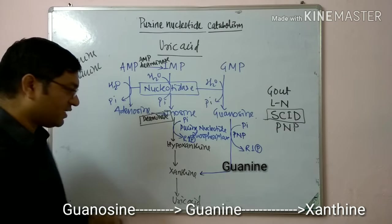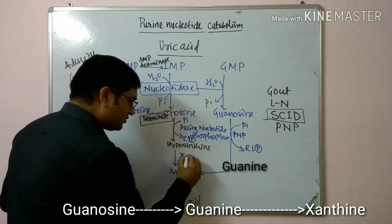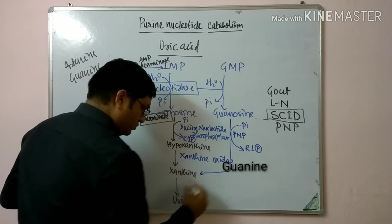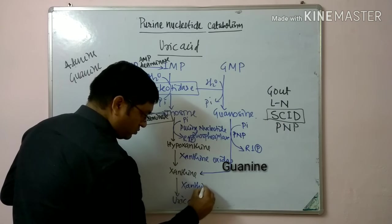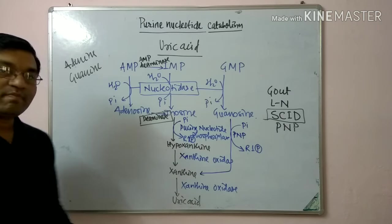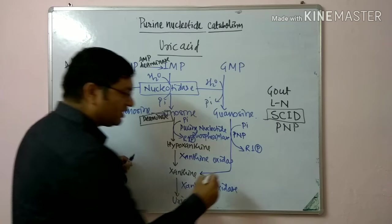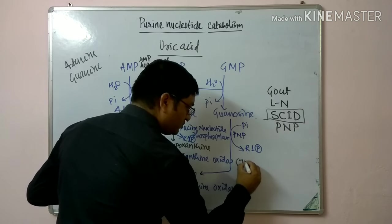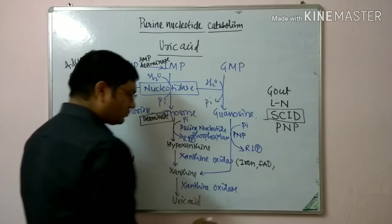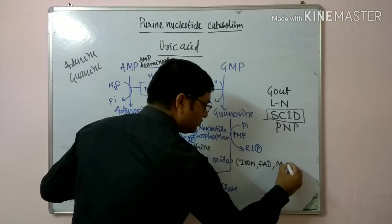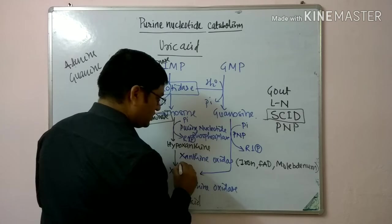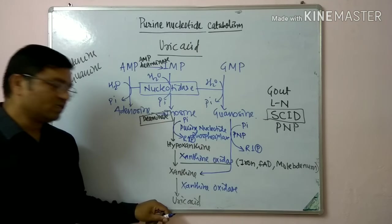There is one important enzyme: xanthine oxidase. This is a metalloflavoprotein which contains iron, FAD, and molybdenum. This enzyme is important in uric acid synthesis.